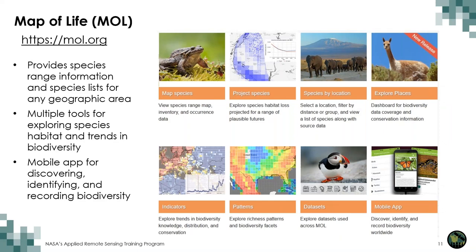Map of Life is a web platform geared for large biodiversity and environmental data. It aims to support effective global biodiversity education, monitoring, research, and decision making by assembling and integrating a wide range of knowledge about species distributions and their dynamics over time. There are many tools available to map species, explore environmental parameters, evaluate patterns, and you can also obtain their mobile app to discover, identify, and record biodiversity data.